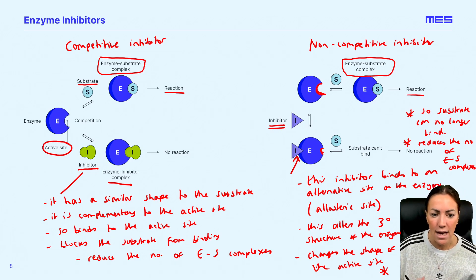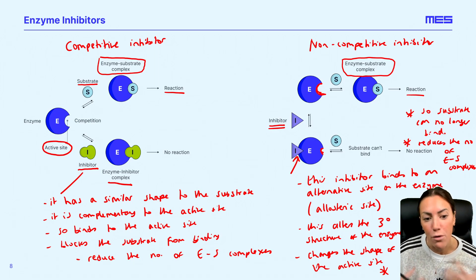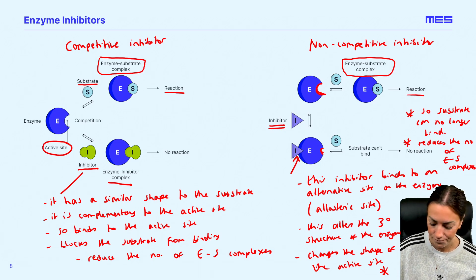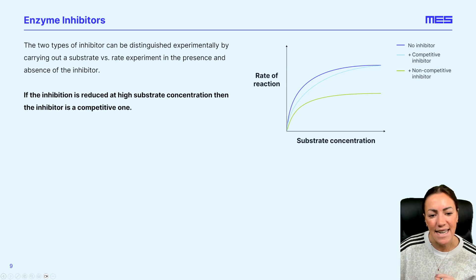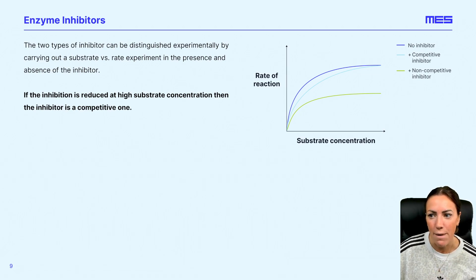So two different types of inhibitor work in two different ways, but the overall result is they will reduce the number of enzyme substrate complexes that form, and therefore they will both reduce the rate of an enzyme-controlled reaction. They can be distinguished by experimentally carrying out a substrate concentration versus rate experiment in the presence and the absence of the inhibitor.